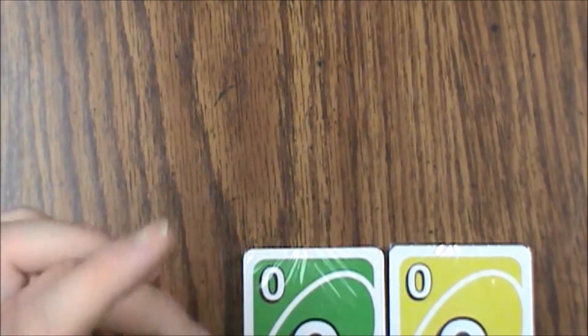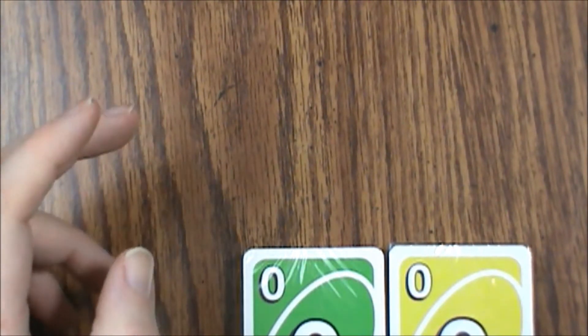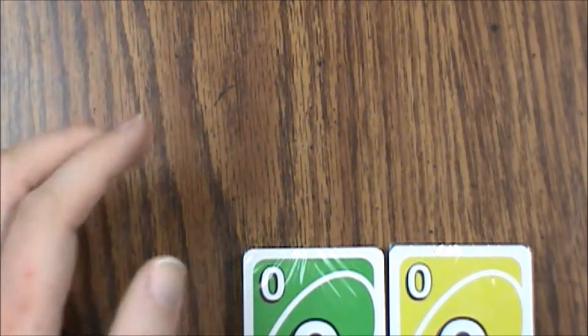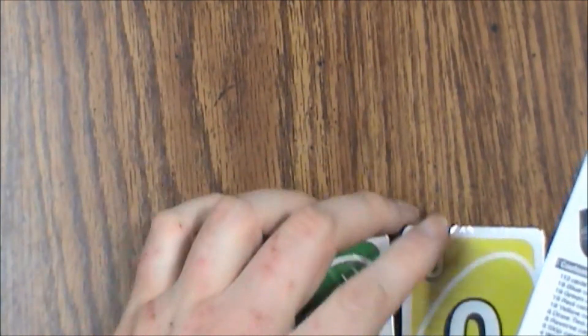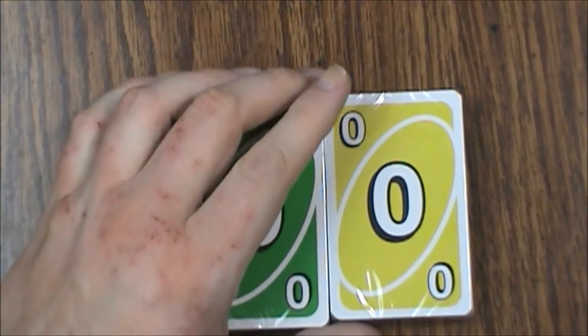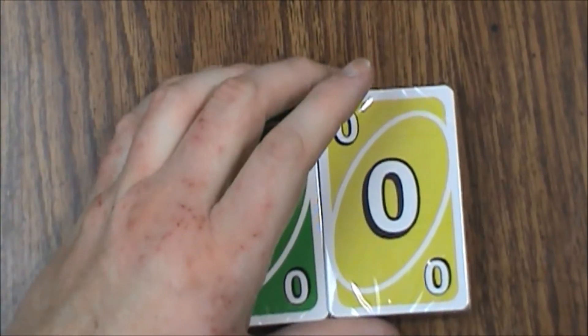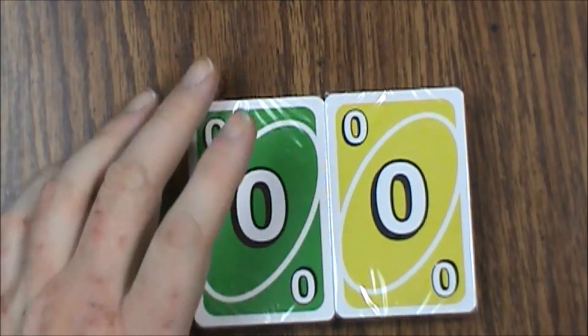And it does tell you how many of each color you've got. So we're going to see 19 blue cards, 19 green cards, 19 red cards, 19 yellow cards, eight draw twos, eight reverses, eight skip cards, four wild cards, four wild draw four cards, one wild swap hands card. That's a fairly new one. I've never seen that before, but I haven't played Uno in a decade. Three wild customizable cards. So let's take a look at what we've got.